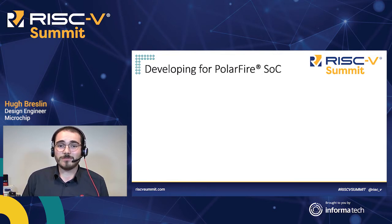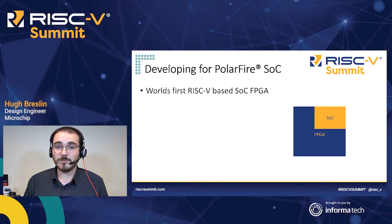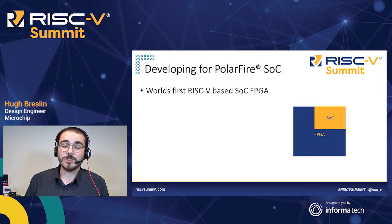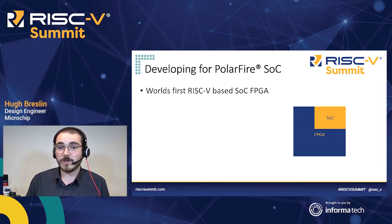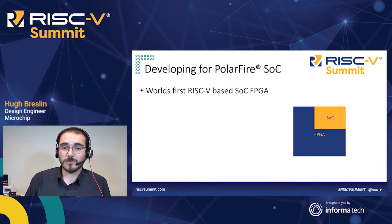So to get started, let's briefly look at what PolarFire SoC is. It's the world's first RISC-V based SoC FPGA. We've had PolarFire FPGAs around for a while — it's a very good family. Looking at the image on the right, you can see the FPGA and the SoC. When we talk about PolarFire, that's our FPGA fabric. But with PolarFire SoC, we've added the SoC portion by taking out some of the FPGA fabric and putting in our microcontroller subsystem, which contains our application and monitor cores and some peripherals.